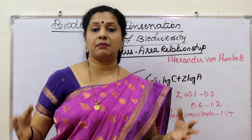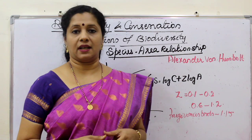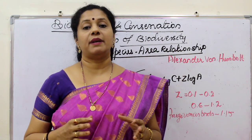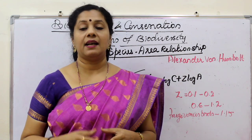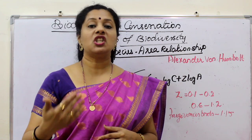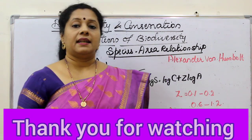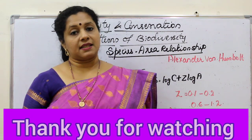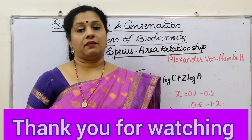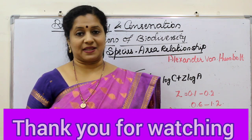If you take a continent, you can see frugivorous birds in many parts, so the Z value is very high. So, species-area relationship basically says that when we explore more area, species richness increases but only up to a limit. In the next video, we will discuss the importance or significance of biodiversity to the ecosystem.